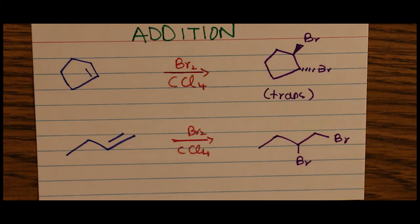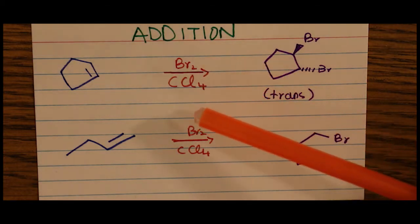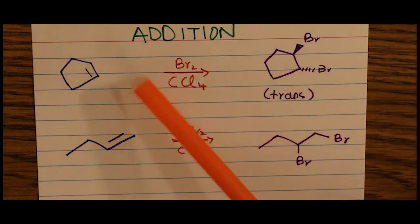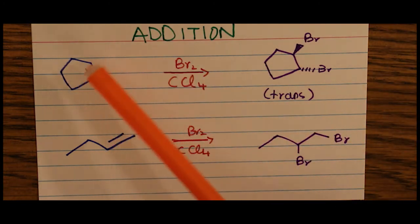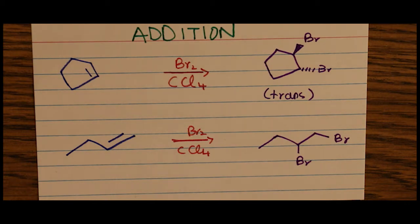So in this case we have bromine, Br2, along with carbon tetrachloride. Bromine adds across the double bond in this pentene ring, but the bromines add trans to each other. That means one bromine is coming towards us and one bromine is going away from us in three-dimensional space, or you can say they add on different sides of the double bond.